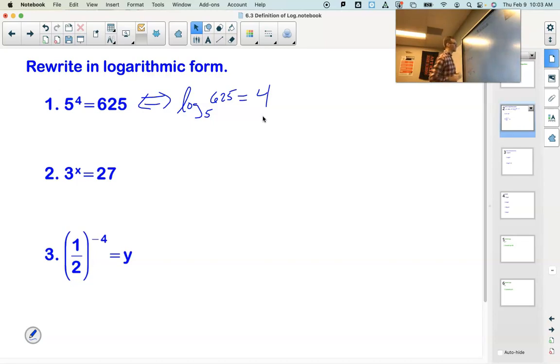Now, 3 to the x equals 27. Log base 3, base of the exponential, of 27 equals x. The exponent goes on the other side.